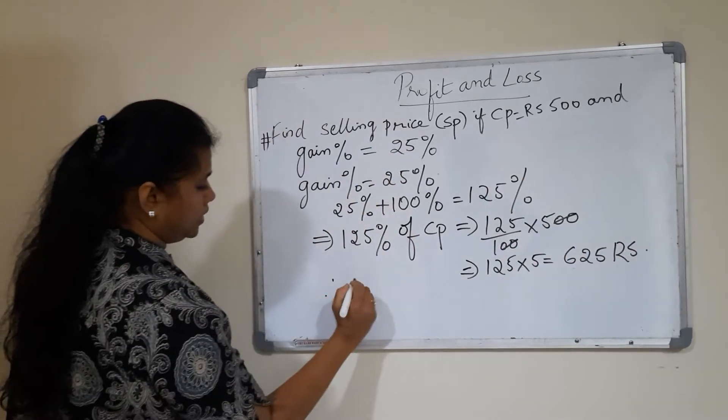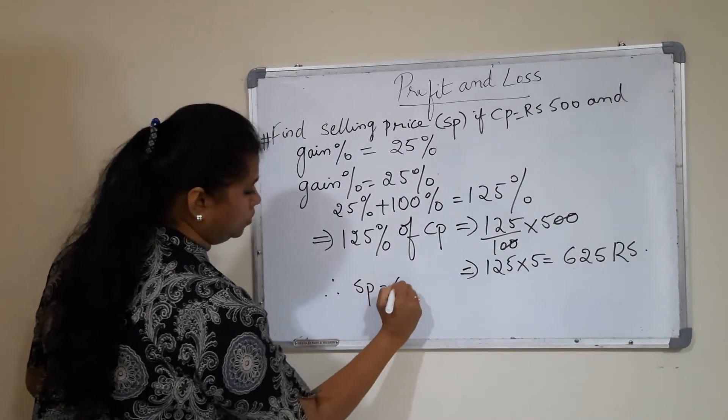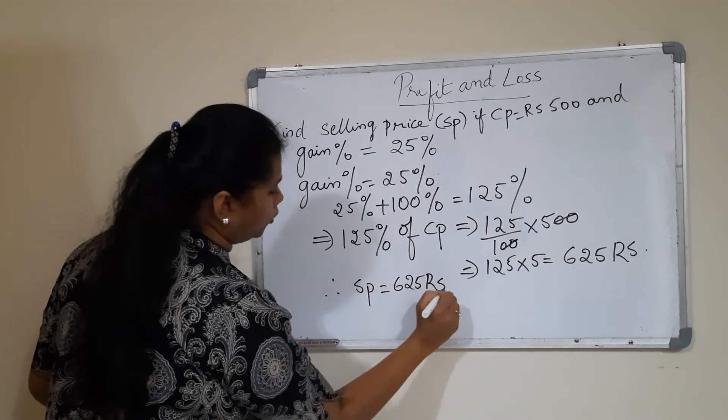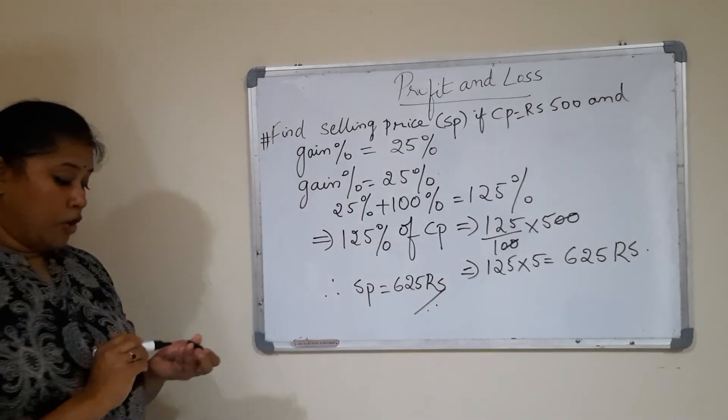Therefore, SP equals 625 rupees. This is an easy way to find it instead of doing the normal procedure.